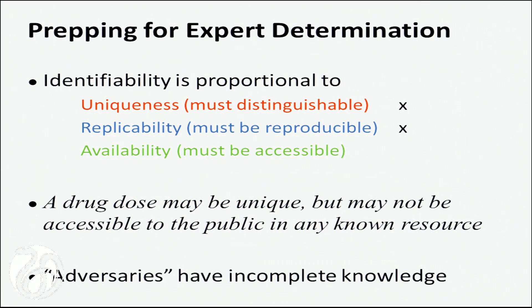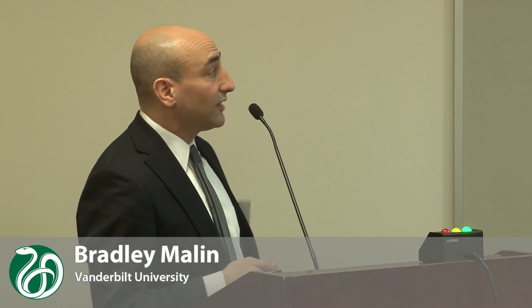That's not my definition of de-identification that I tend to use in practice. I tend to go more towards expert determination, which is a proportionality measure. We look at a few things: uniqueness — you must be able to distinguish people in the population; reproducibility — the data must be replicable and not exist only in one database; and availability — there must be people who actually have access to the resources you're concerned about. If not, the chances of re-identification are pretty slim.